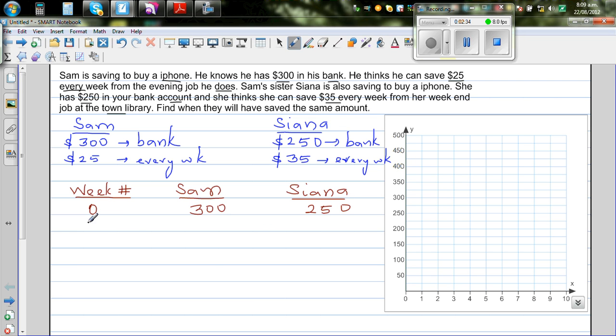After one week, you add $25 to Sam, so that is $325. And you're adding $35, so this is $285.